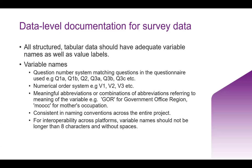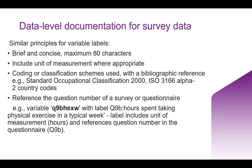We should have meaningful abbreviations, such as G-O-R for government office region. There should be a consistency in the naming conventions across the entire project, especially where there are different datasets across the project. And finally, for interoperability across platforms, variables should not be longer than eight characters and should be without spaces. Some platforms don't like longer names or spaces being used.